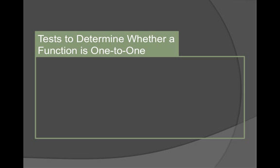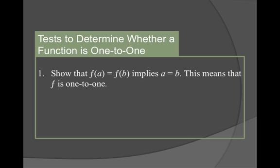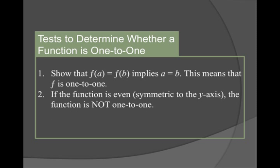So some tests you can use to determine whether a function is 1 to 1. Like the first two examples, you can plug in a and b into your function, do a little bit of algebra, and see if you get to a = b. If you do, then the function f is 1 to 1. If the function is even, so if we get a y = x², y = x⁴ + x², something like that, where we know the function's even, then the function is not 1 to 1. Without any work. Once we know it's even, it's not 1 to 1.